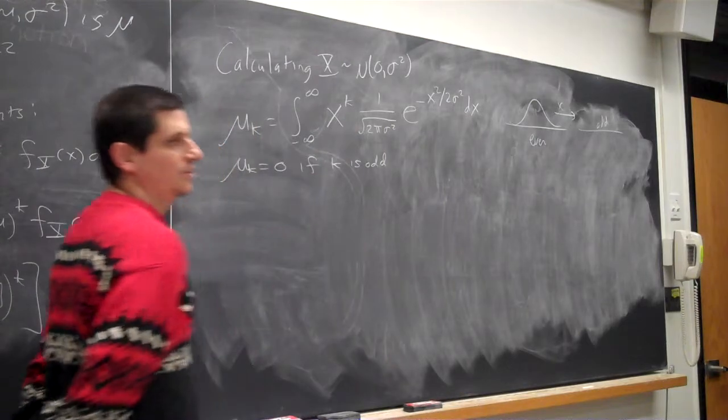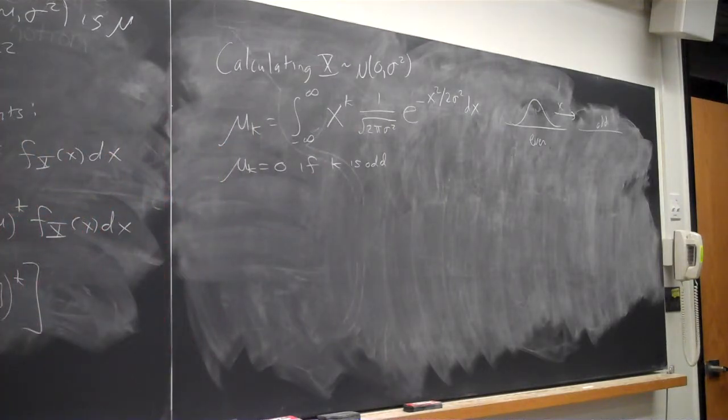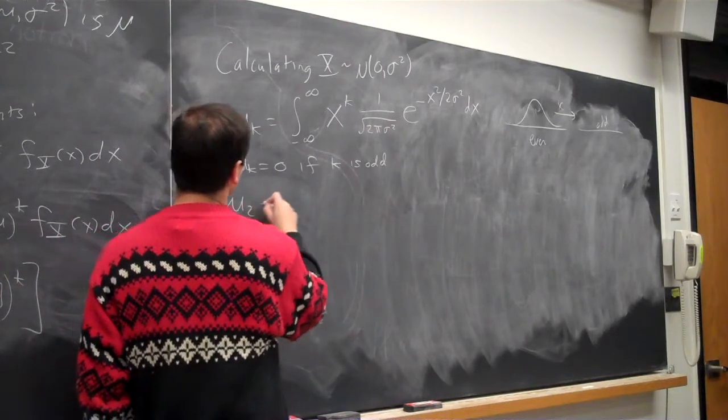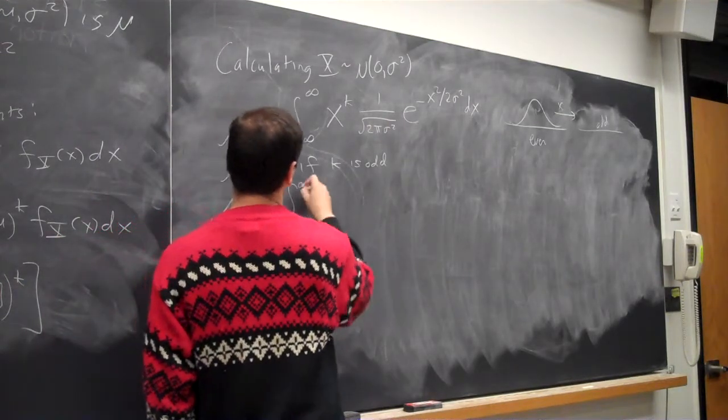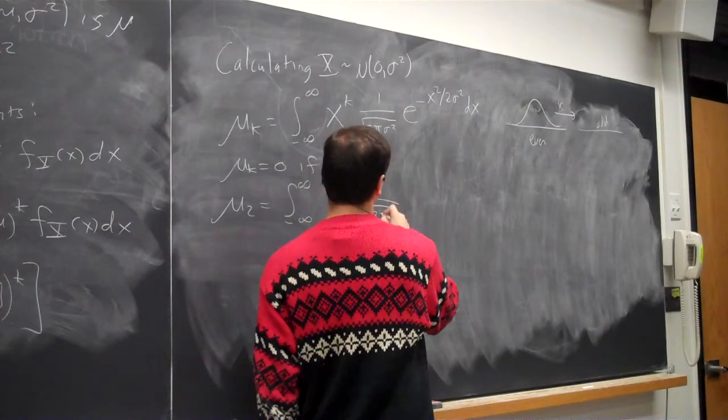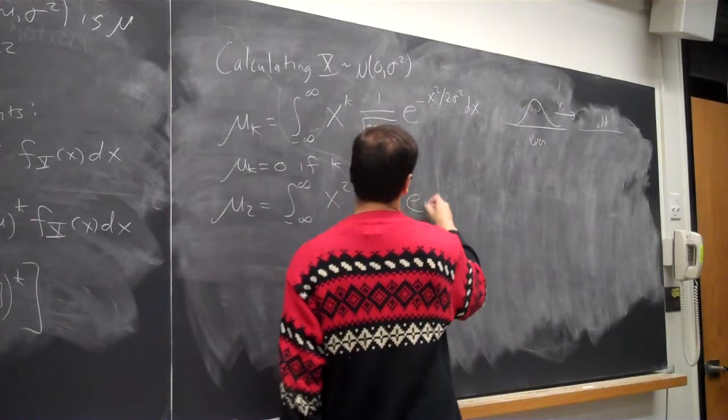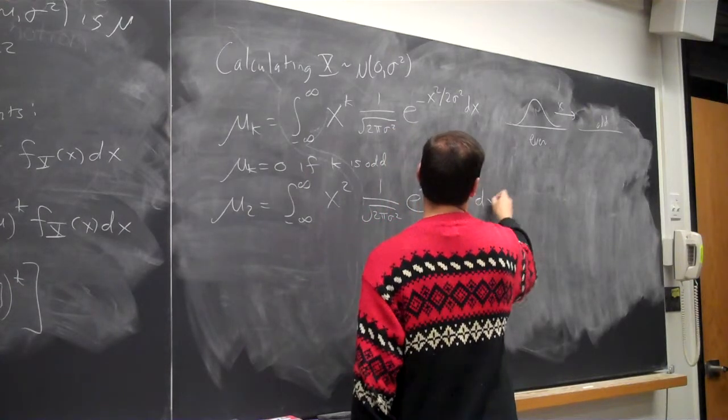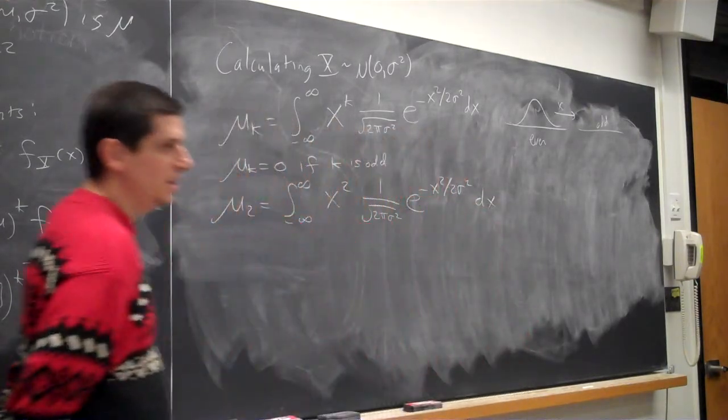Fifty percent done. Only infinitely many more k to go. What k should we look at next? Okay. So I'm going to show you one way to do two. Mu two is equal to minus infinity to infinity of x squared one over square root of two pi sigma squared e to the negative x squared over two sigma squared dx.